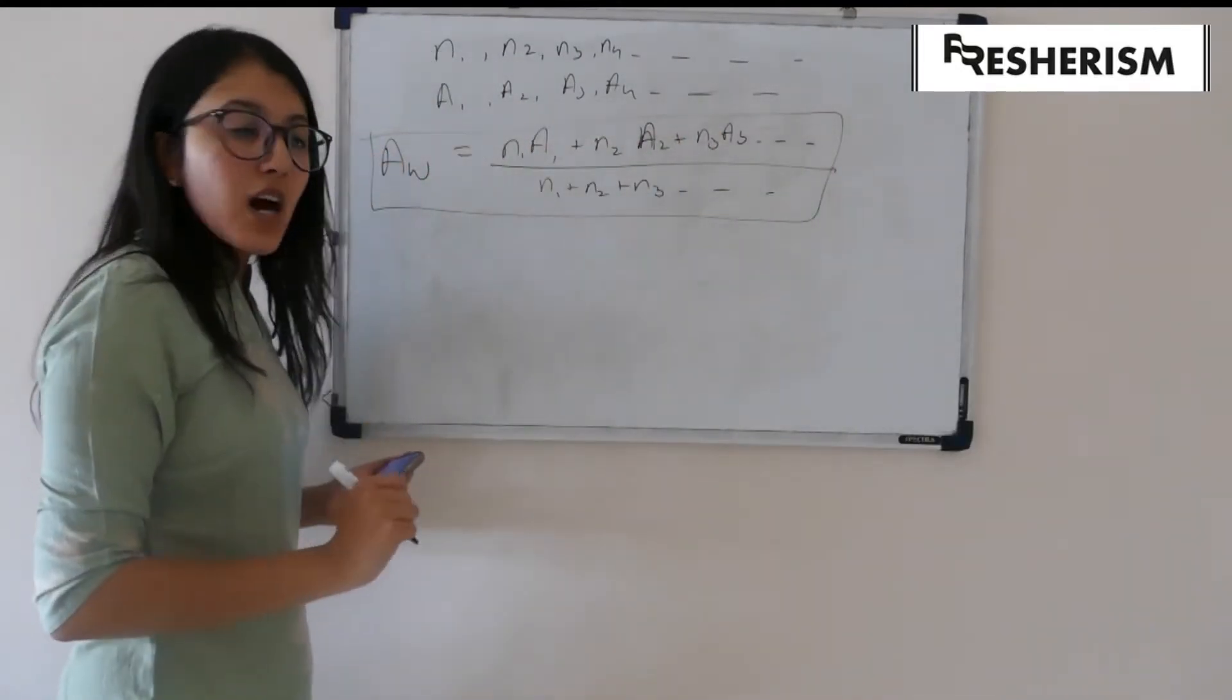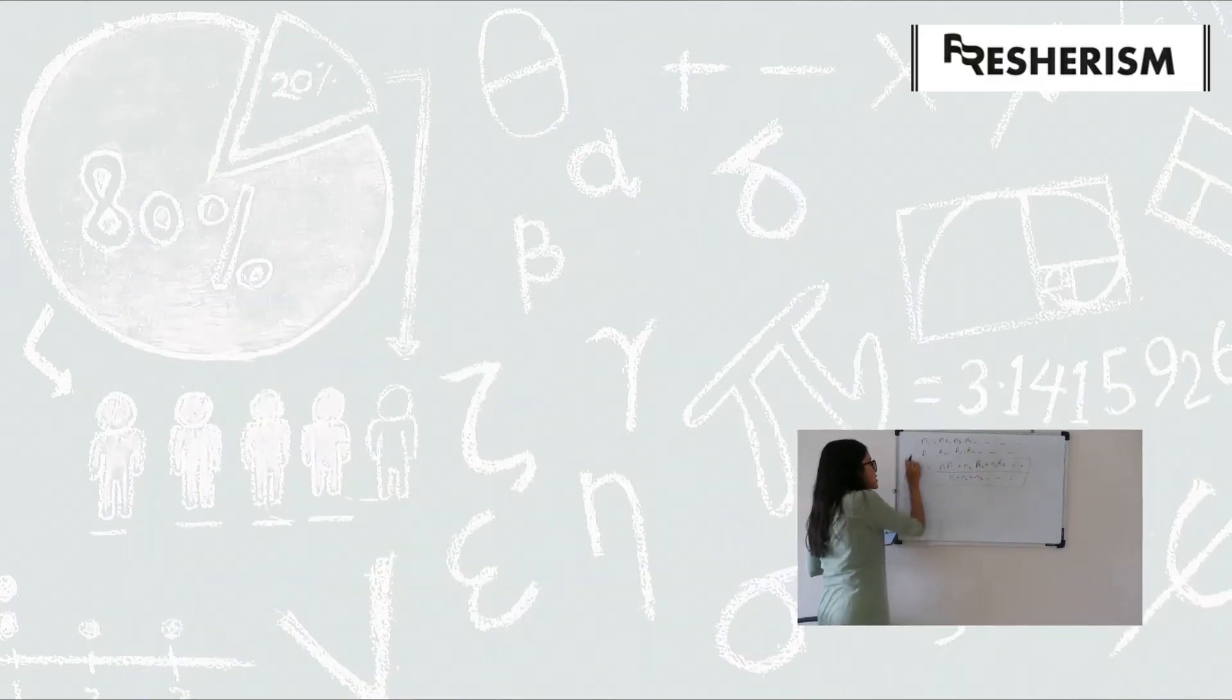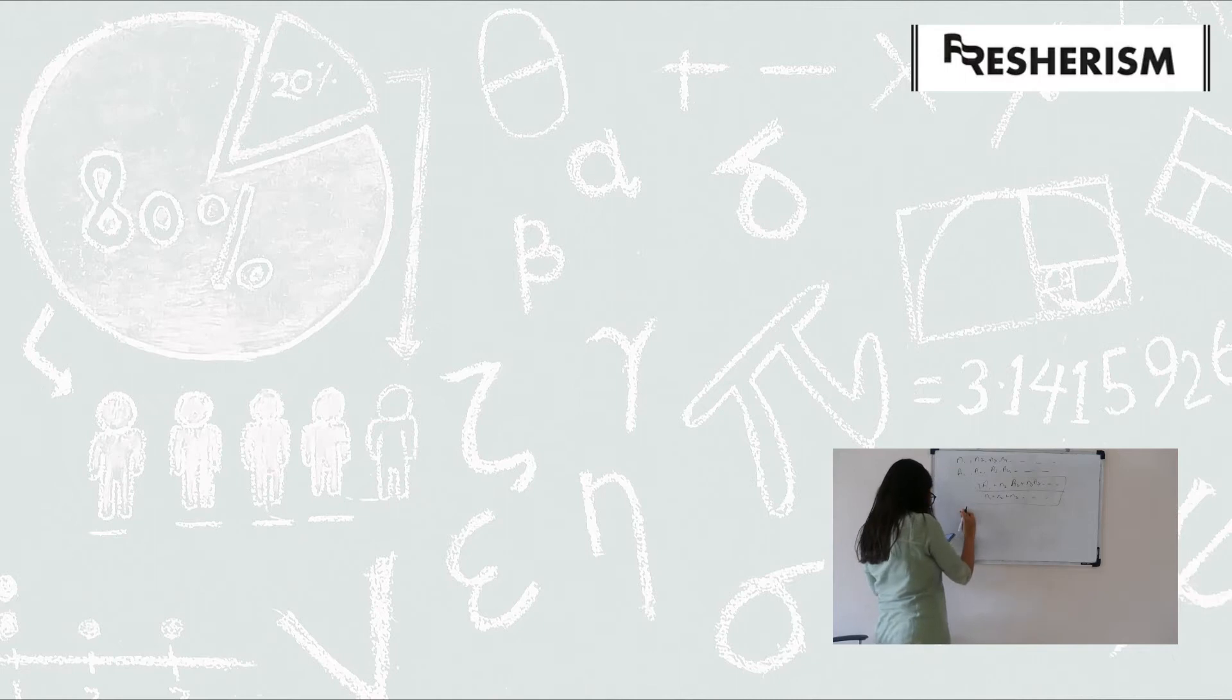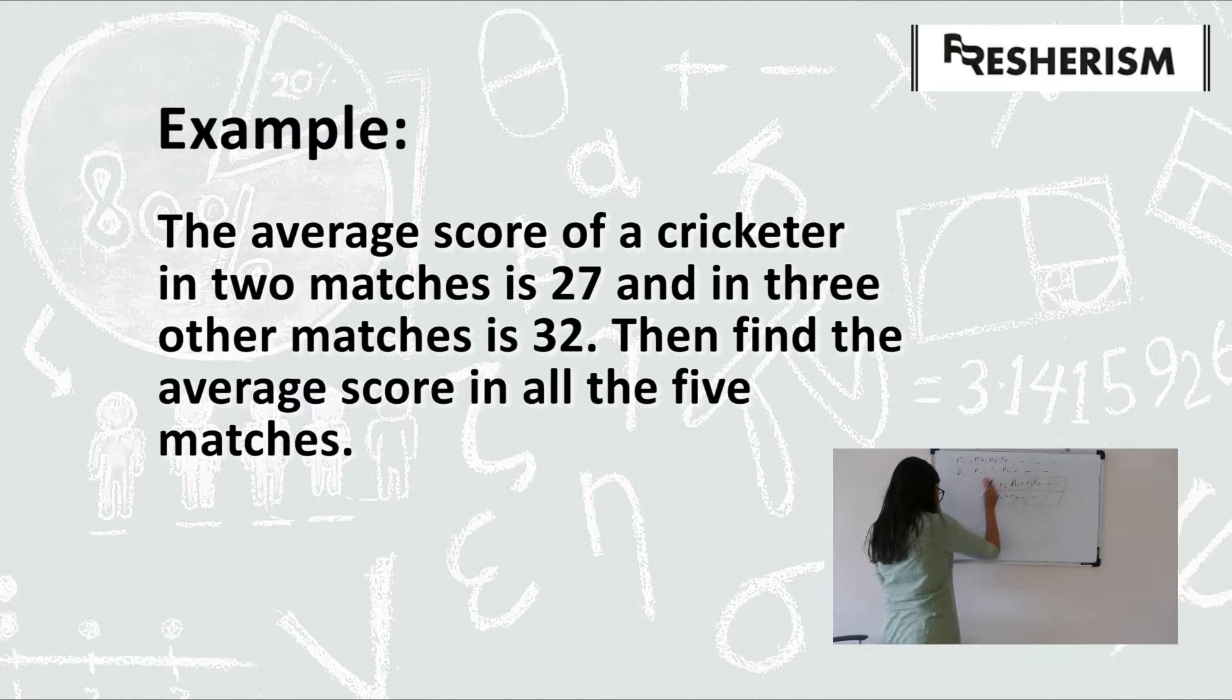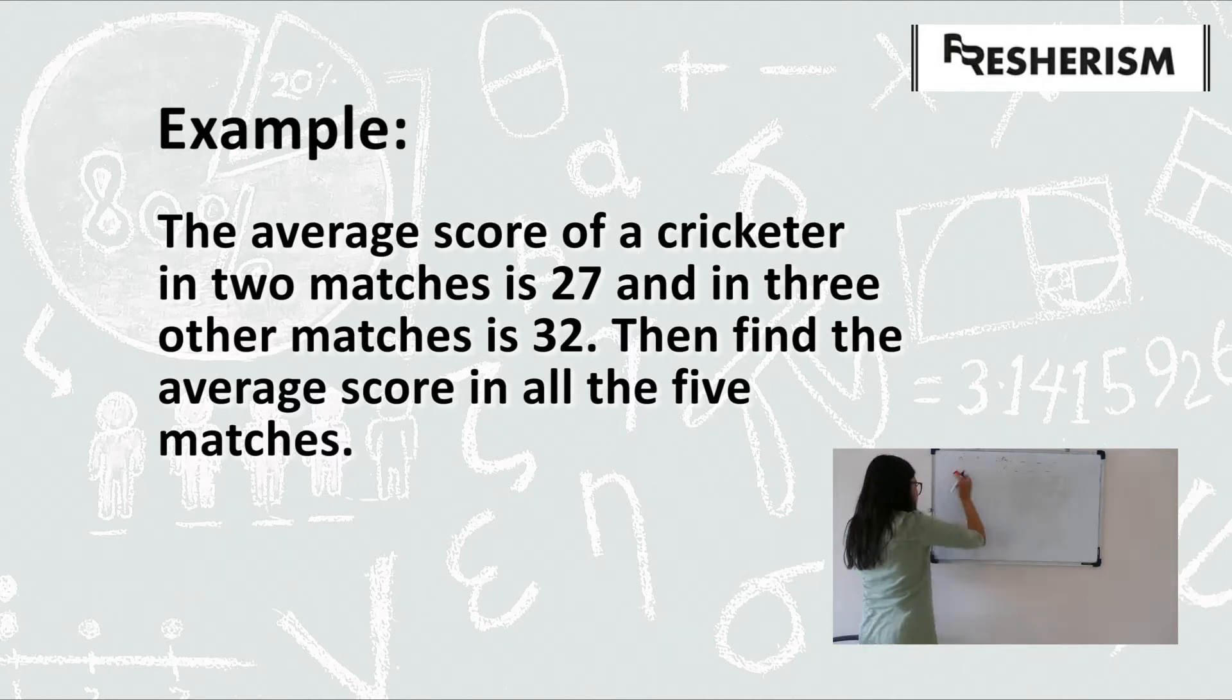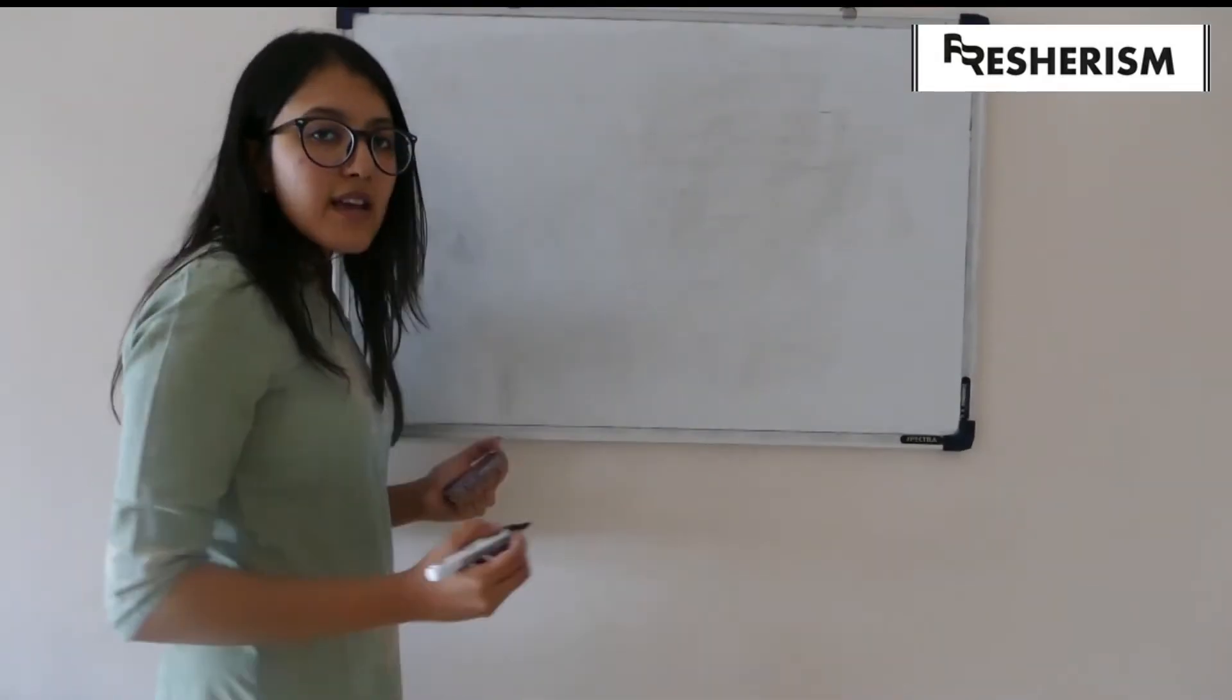I hope this is clear. Let us now look at a few examples to understand this concept in a better way. The example on your screen now reads: The average score of a cricketer in two matches is 27 and in three matches is 32.